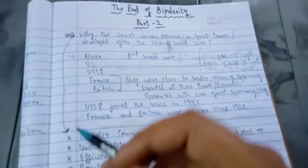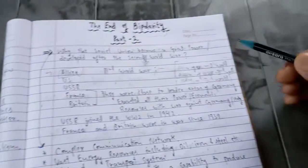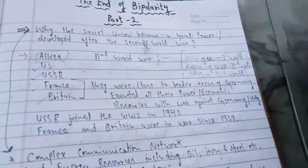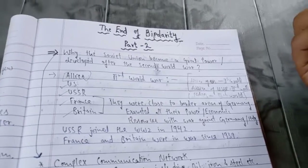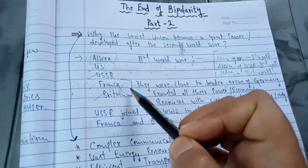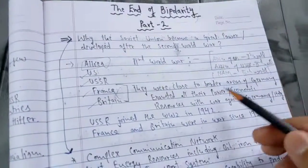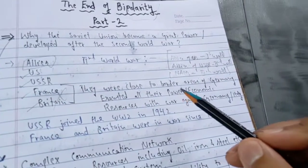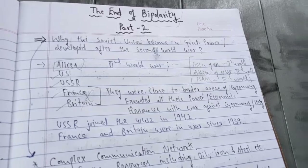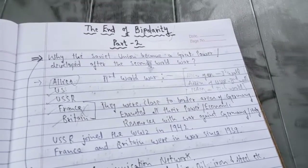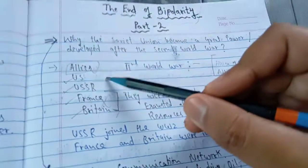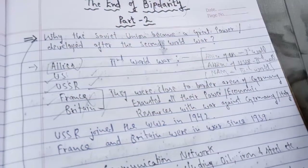During the Second World War there were two sides: the Allies — including the USSR, France, and Britain — and the Axis. The US was already a superpower, but France and Britain were no longer superpowers after the war, although they won alongside the US and USSR. Their economic and power resources were exhausted because they were in direct border contact with Germany and were at war continuously from 1939 to 1945.